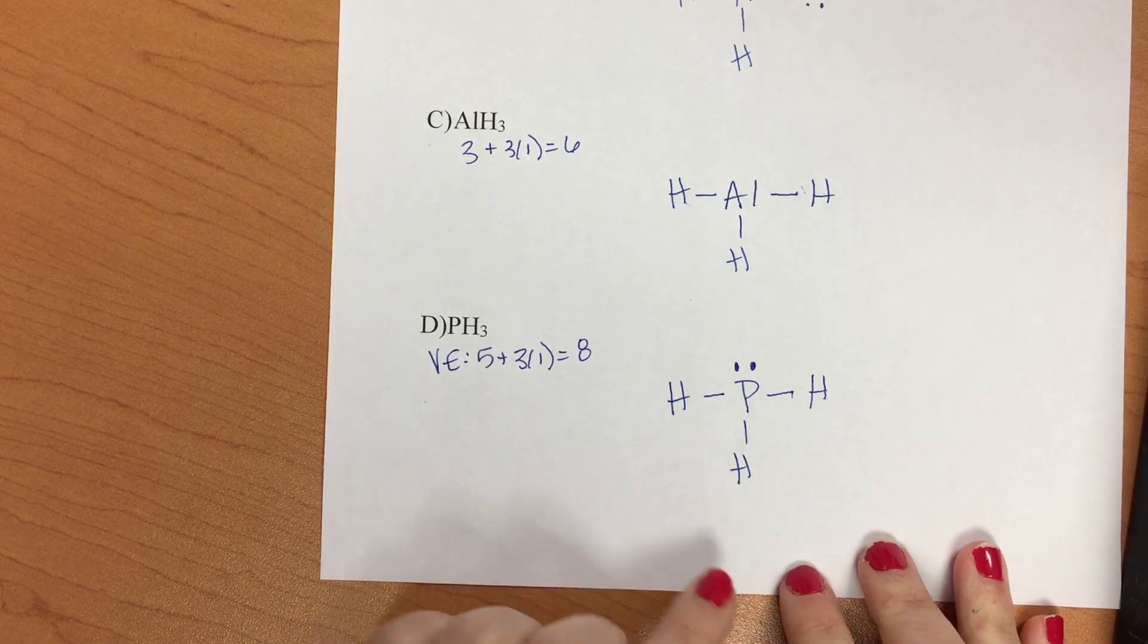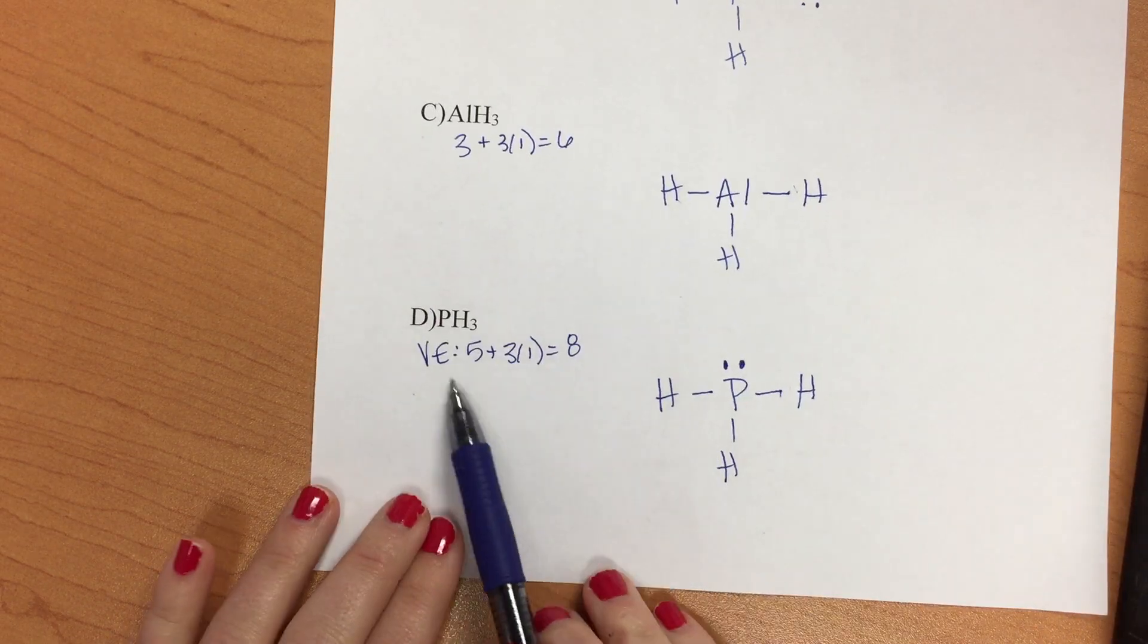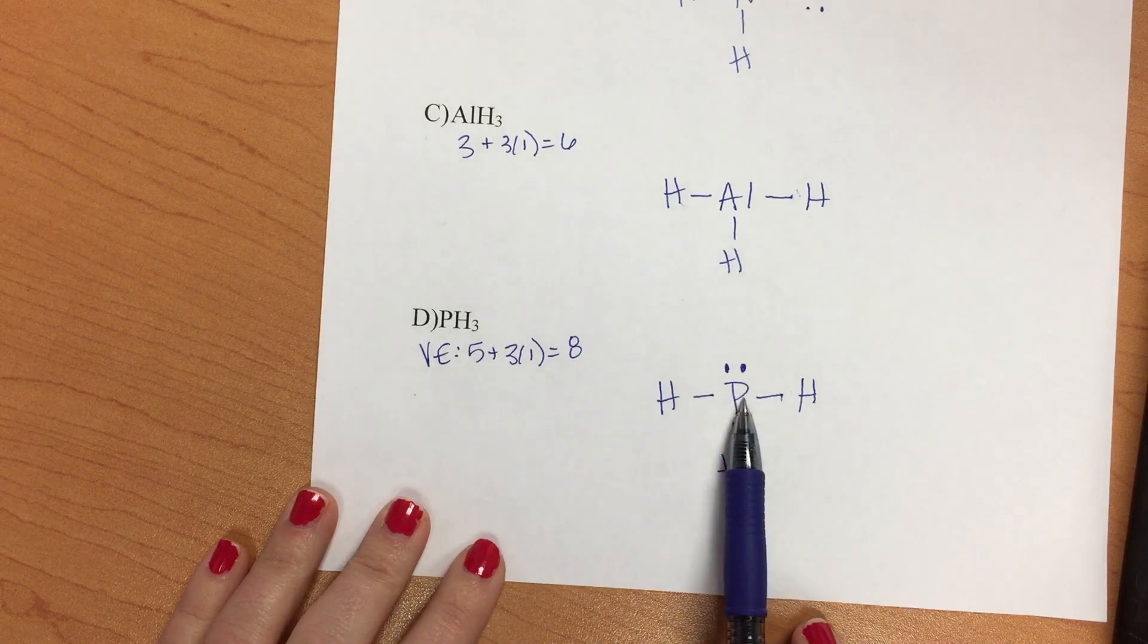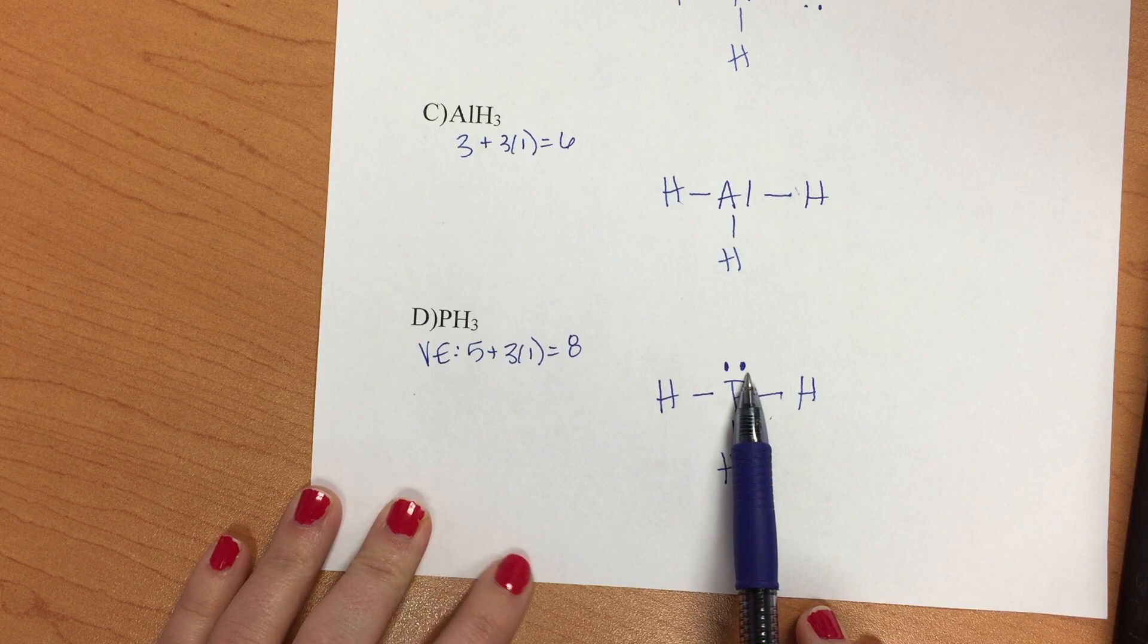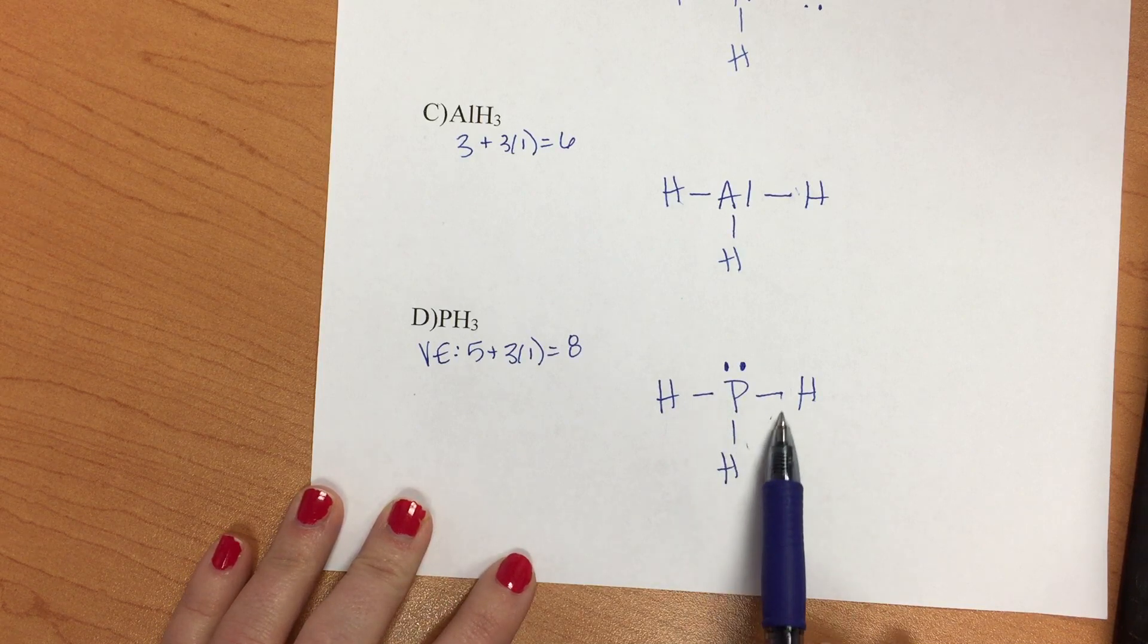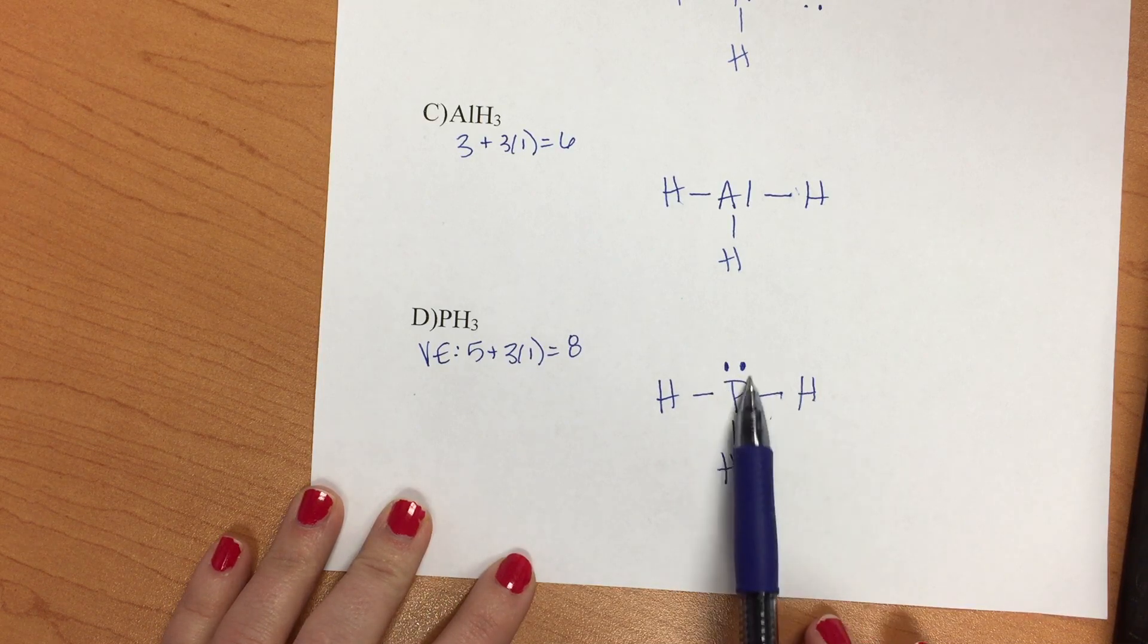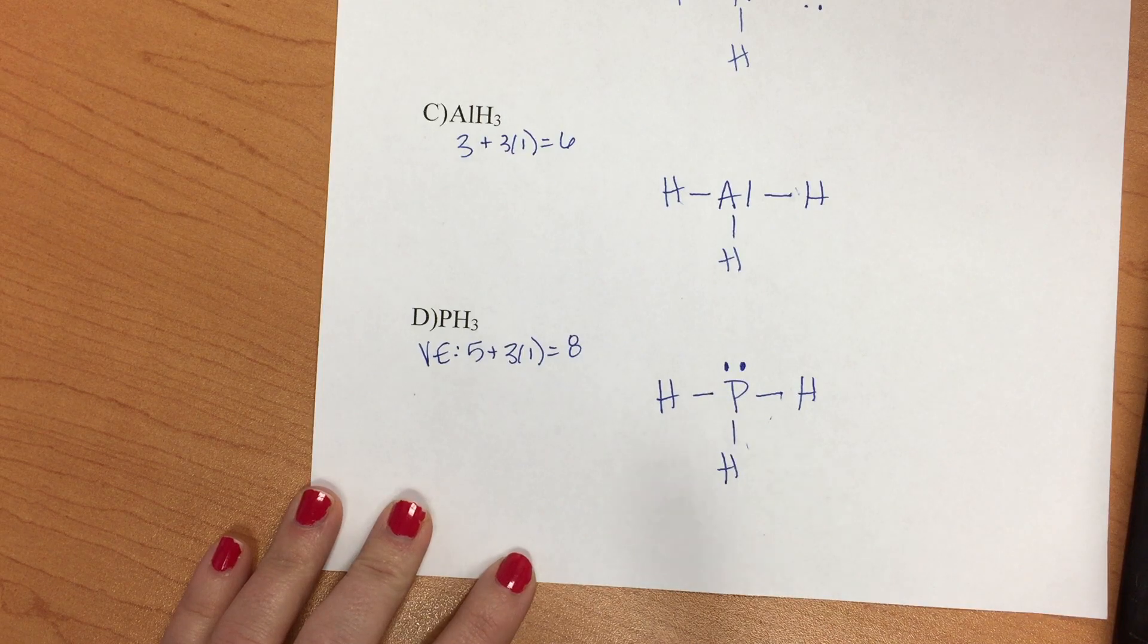So to create a Lewis dot structure, you count your valence electrons, put the central atom, connect everyone, fill octet. Remaining electrons go on the central atom. Or you can create double or triple bonds using your exterior atoms to achieve octet on your central atom.